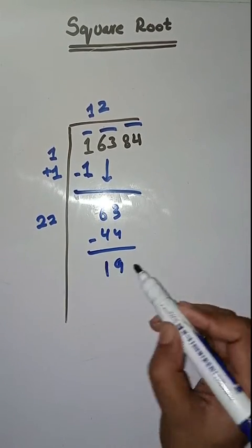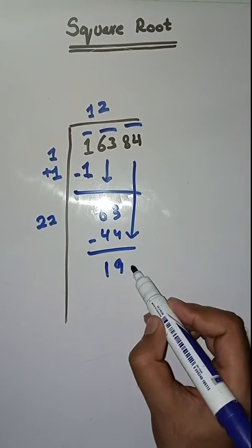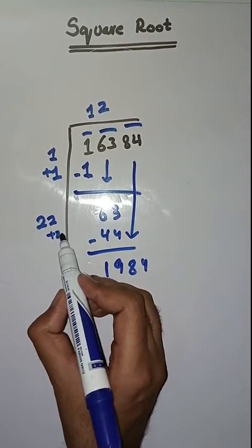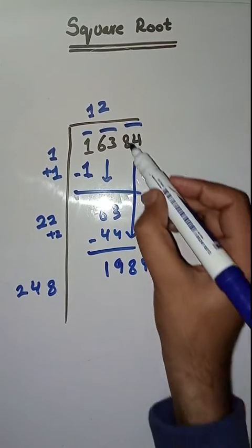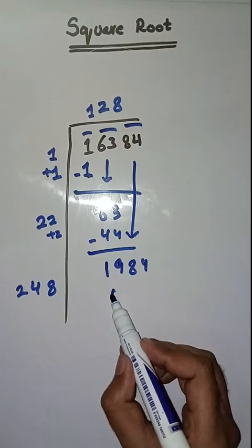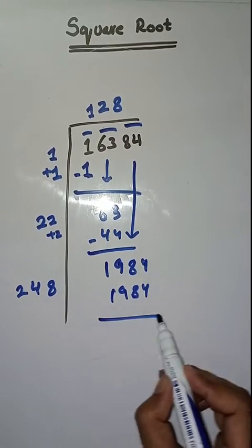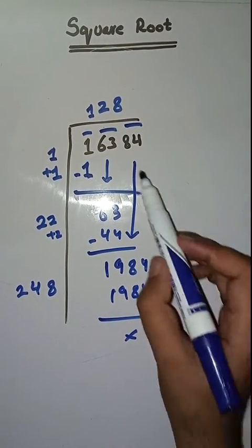And 5 minus 4 is 1. Next pair is 84, we bring it down. Now we will take our number 8. 248, 1984. So it's completely solved. The square root of 16,384 is 128.